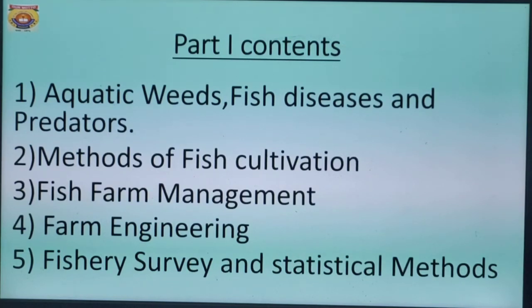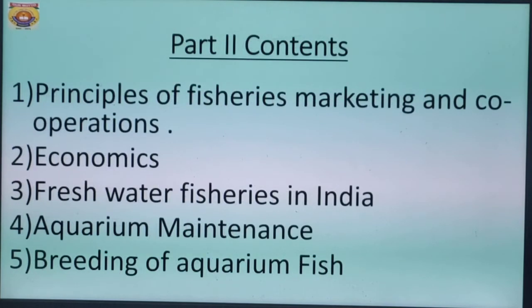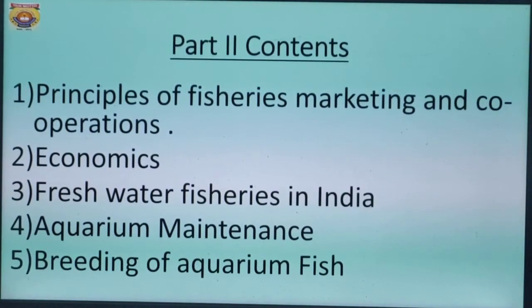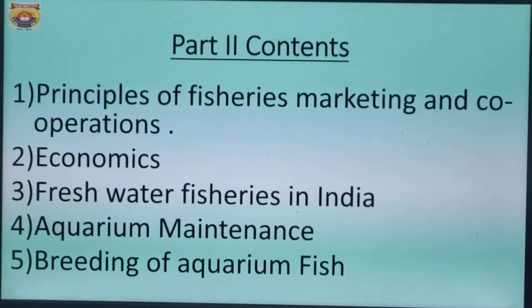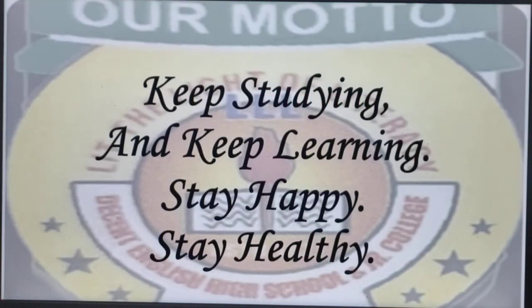Now we move on to part 2 contents. First is principles of fisheries marketing and cooperation. Second, economics. Third, freshwater fisheries in India. Fourth, aquarium maintenance. And fifth, breeding of aquarium fish. Children, these are the five chapters you have to study in section 2. I hope you all must have enjoyed and understood. Keep studying and keep learning. Stay happy, stay healthy. In the next session, we begin with part 1. Thank you, students.